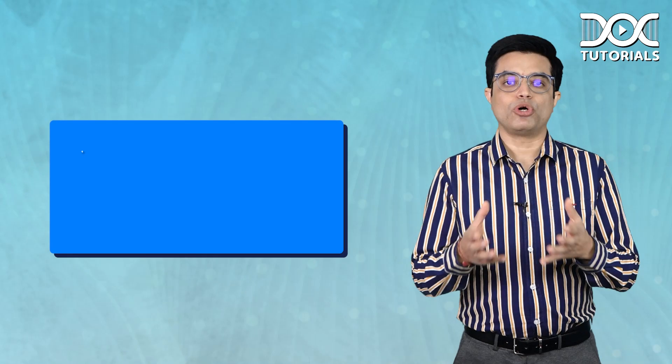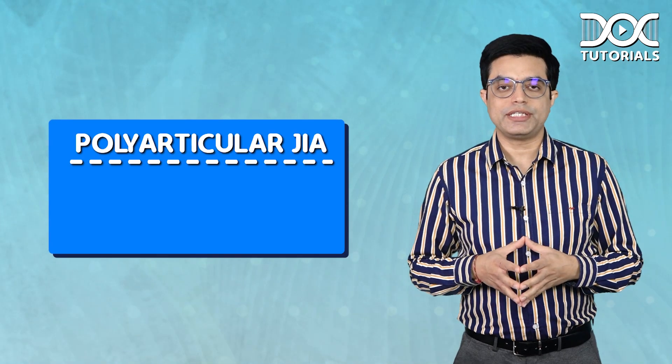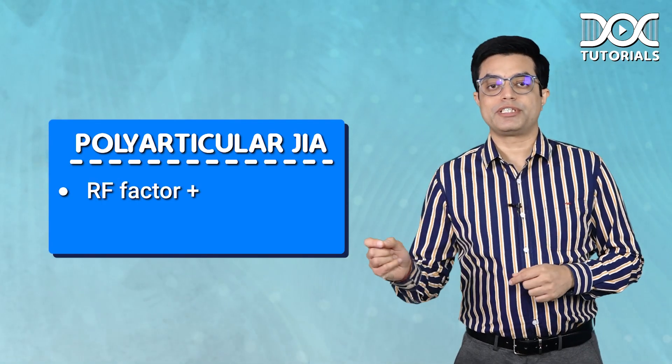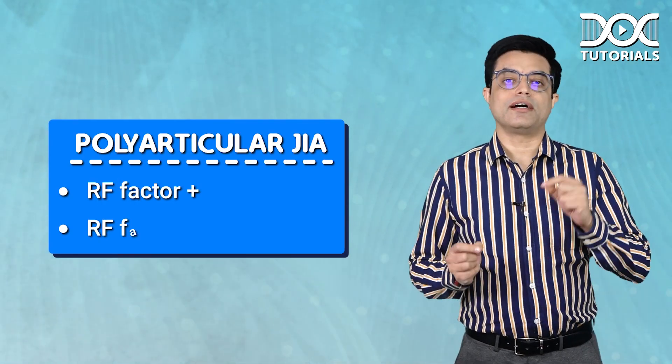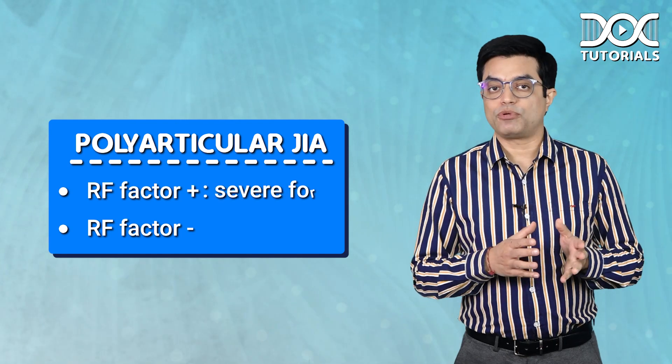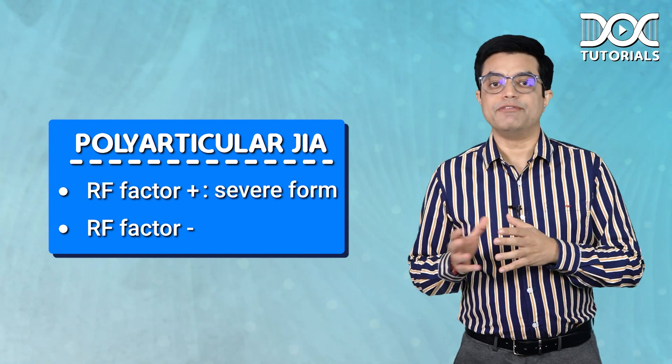Then we have polyarticular JIA, which can have a rheumatoid factor positive variety and an RF negative variety. The RF positive one is the severe form.